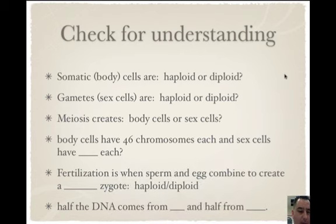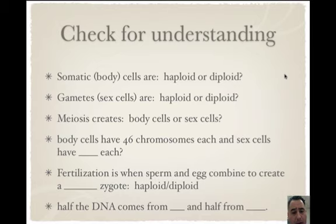Somatic body cells are diploid. Gametes, which are sex cells, are haploid — they have half the amount and only one of each set. Meiosis creates sex cells. Body cells have 46 chromosomes each, and sex cells have 23. Fertilization is when sperm and egg combine to create a diploid zygote once again. Half the DNA comes from mom and half from dad.